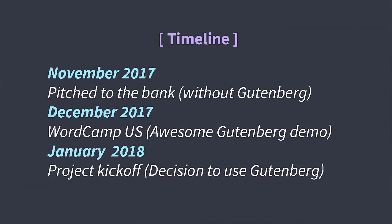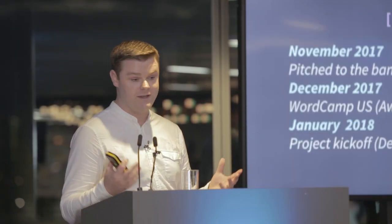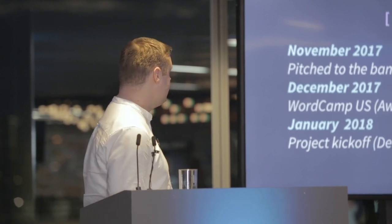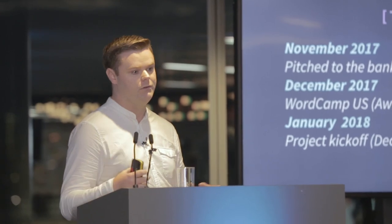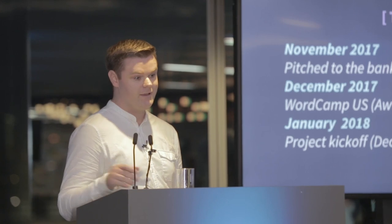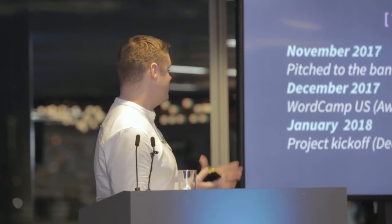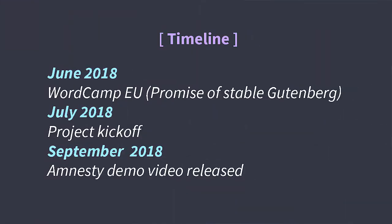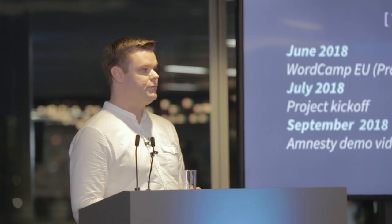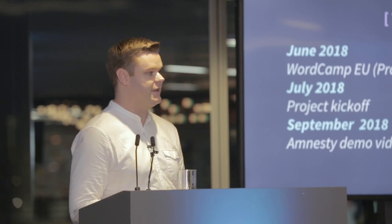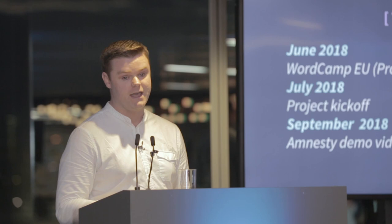In November last year we met with the bank, pitched a project, and Gutenberg wasn't really in it — Simon suggested installing it on the side but no one really talked about it. We showed them how cool WordPress is without Gutenberg, demoed the app, and they loved it. Then we went to WordCamp US and there was just so much buzz about what Gutenberg was going to do — the next big thing. They did a really awesome demo, it looked super stable, and we came away with a great feeling. So we pretty much convinced the bank to do Gutenberg, and in January we went for it. By June we'd been using it for a while — experiences weren't completely positive yet as it was still early days and in beta. Then at WordCamp EU, Matt was on stage saying it's coming, get ready. At that point we were talking with Amnesty, knew it was stable, and were ready to push the boundaries.